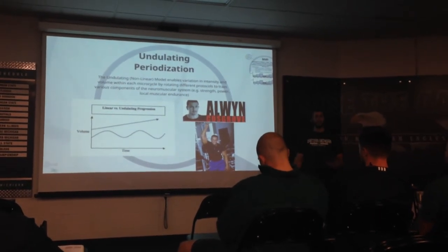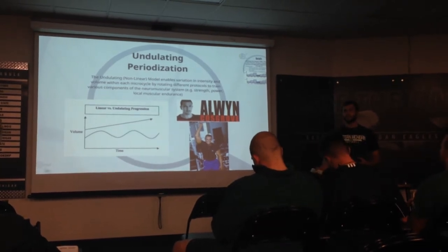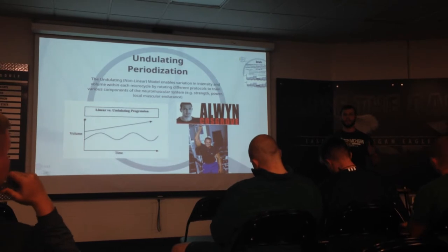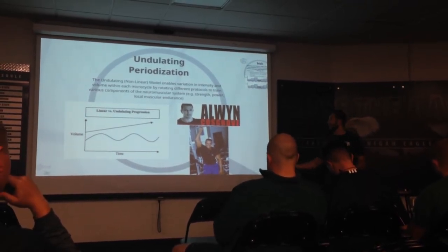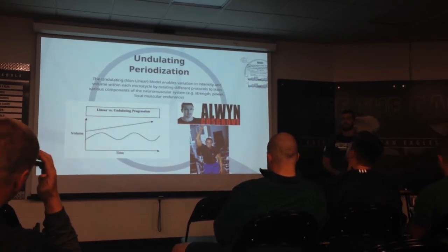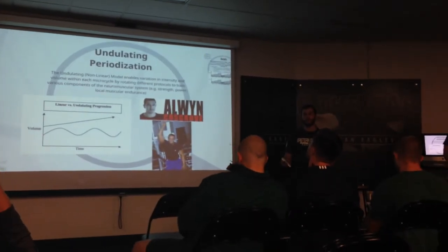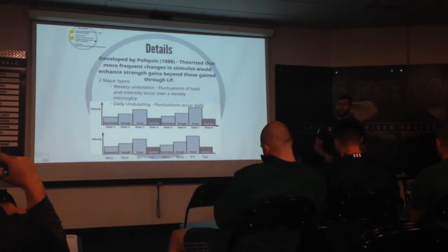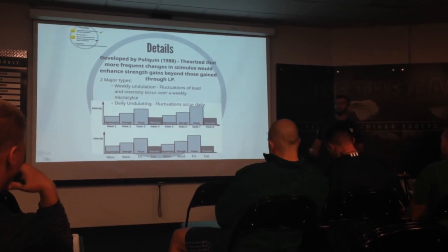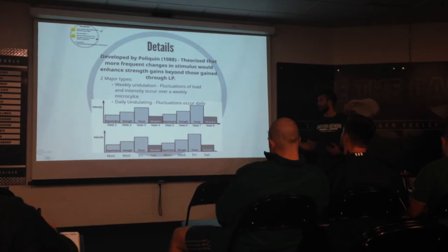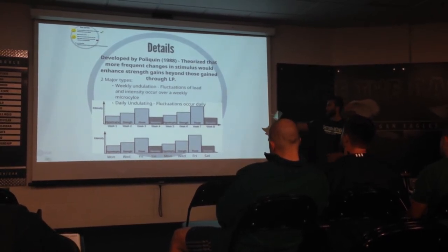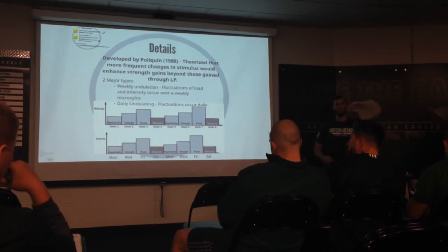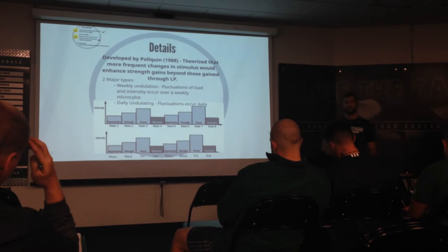Moving on to the last model: undulating periodization, also known as the nonlinear model. This doesn't follow the traditional phases of hypertrophy to basic strength to maximum strength to power. In undulating periodization, we have wave-like variations and we manipulate intensity and volume throughout a microcycle. It was developed by Charles Poliquin in 1988. He theorized that constant variation in training intensity and volume would be a huge improvement over linear periodization. His original design was a weekly undulating periodization model where week one might have hypertrophy, week two strength, week three power — so every week has a different focus, with much smaller blocks and greater variation than linear periodization.